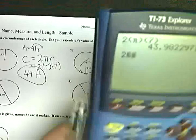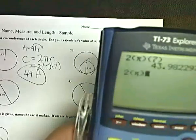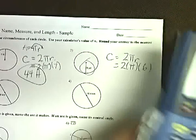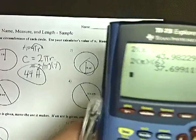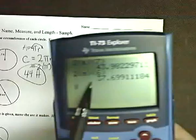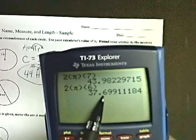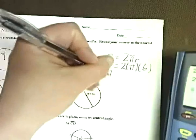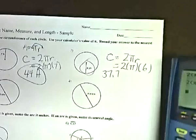So I do 2 parentheses pi, parentheses 6, close it out. 37.69, as you can see once I get it out of the glare. This 9 knocks that 6 up to a 7. Final answer is 37.7 yards.